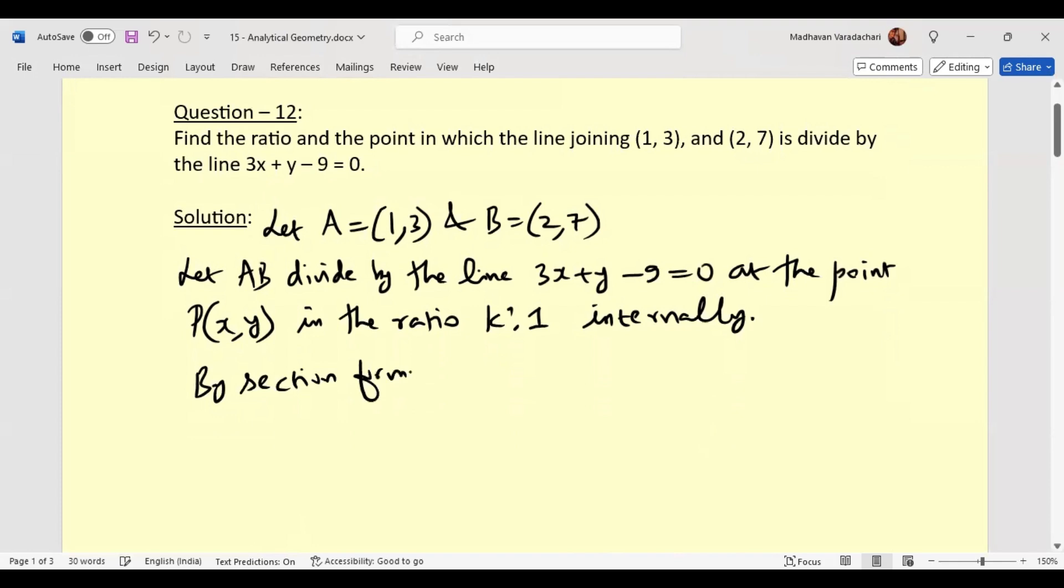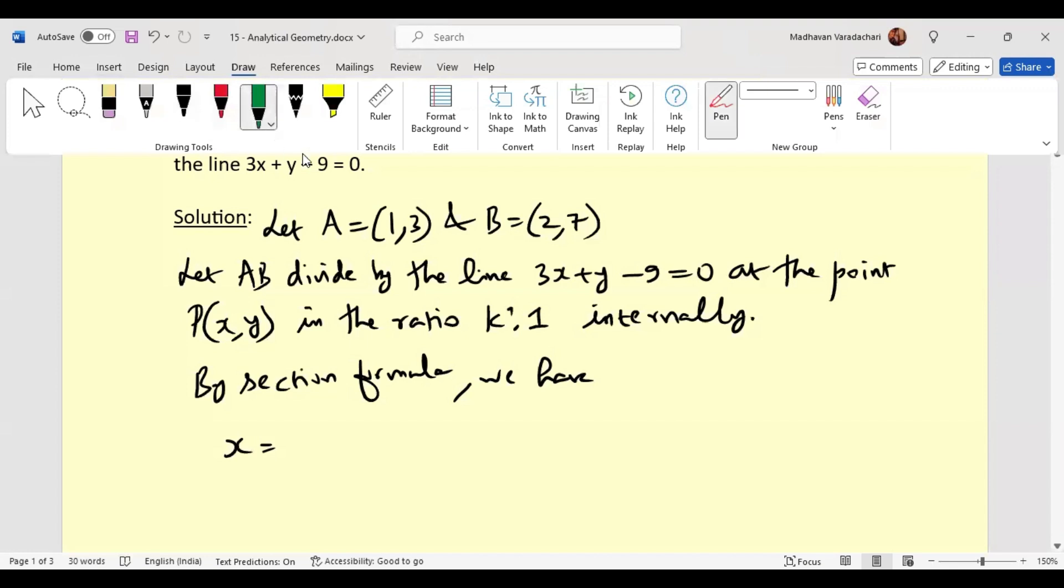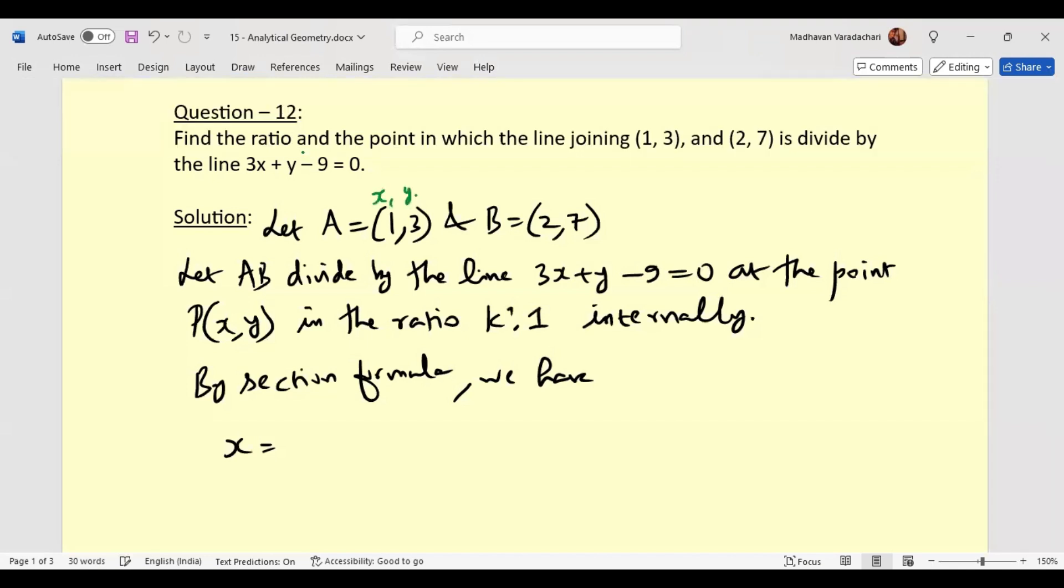we have x equal to mx2. Here we can say this is x1, y1, x2, y2. So x will be mx2, which means k times 2 plus 1 times, that is nx1, that is also 1 divided by k plus 1.